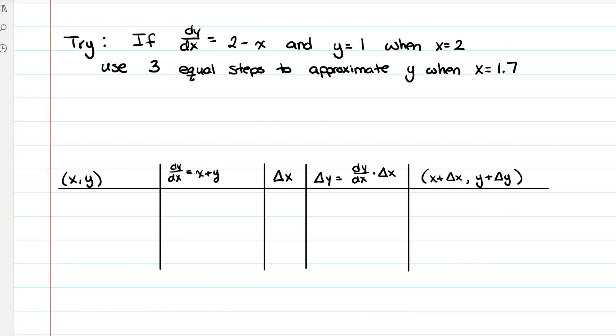So on your own, I want you to go ahead and try this problem. dy/dx is 2 minus x, y is equal to 1 when x is 2. And we get 3 equal steps, and we want x is 1.7.